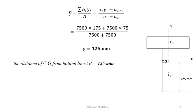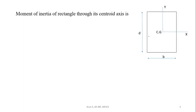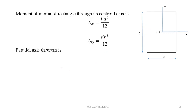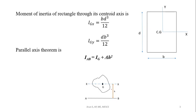Now we have to find out the moment of inertia about the XX and YY axes. First, we will find out the moment of inertia of a rectangle through its centroidal axis: the moment of inertia about the X-axis is bd³/12 and about the Y-axis is db³/12. Also, by the parallel axis theorem, I_AB equals I_G plus A·h².